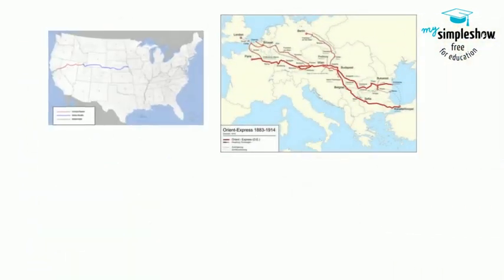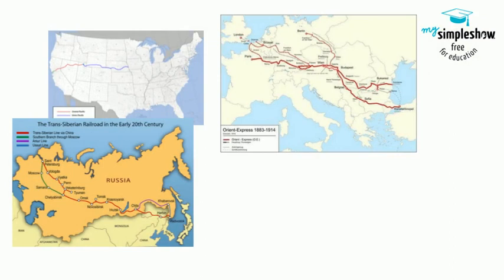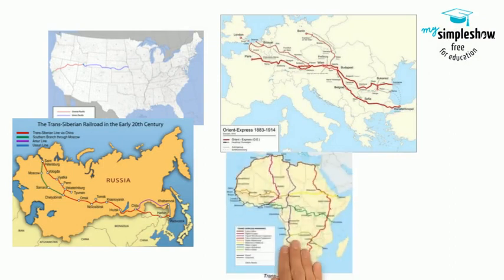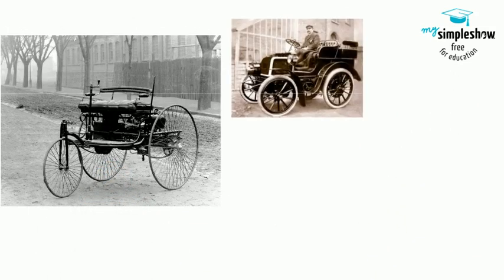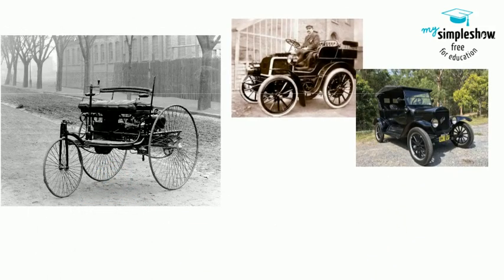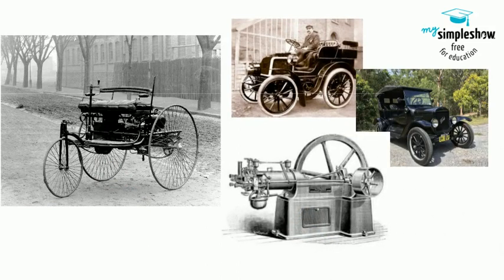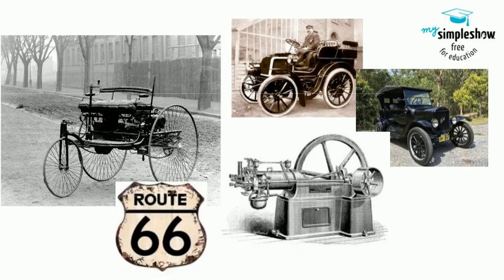All these changes also led to a revolution in transportation, with railroads allowing goods and people to cross continents. Inventors like Benz, Daimler, and Ford created automobiles off of Nicholas Otto's combustion engine, creating shorter distances and the need for national road projects and side service industries.